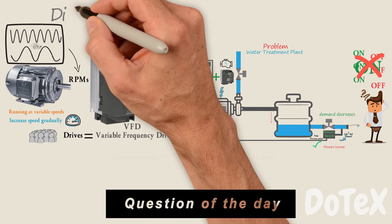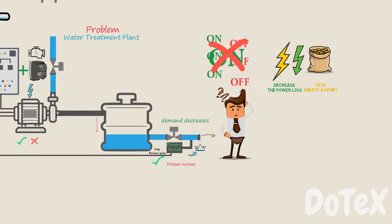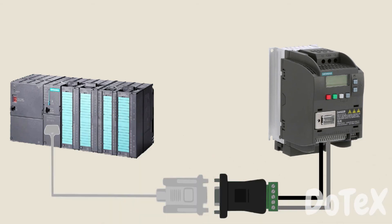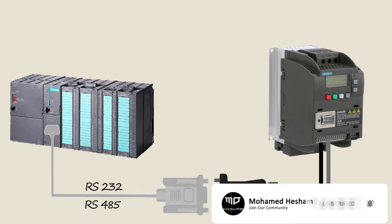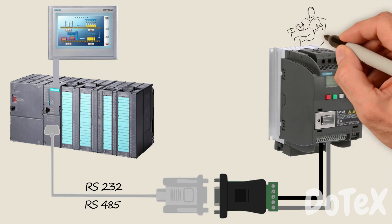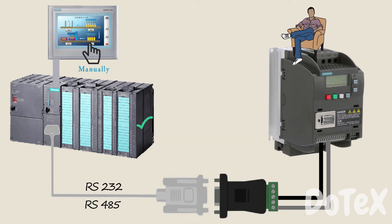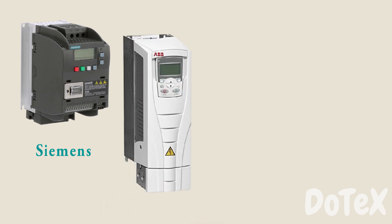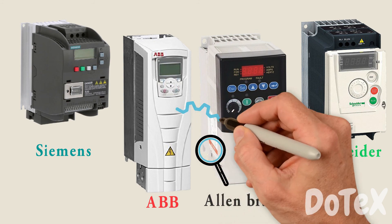Yes or no question of the day: did you hear about this application before? Answer yes or no right now in the comments. Another great thing about VFDs is they can be controlled with a PLC, using basic communication protocols such as RS-232 and RS-485. PLCs can monitor and control motor speeds using the VFD, so VFDs allow the operator to control the flow of the pump manually or automatically with a PLC. By the way, there are many different brands like Siemens, ABB, Allen Bradley, and Schneider — make sure to search well because there are a lot of features available.